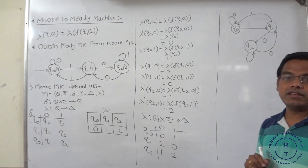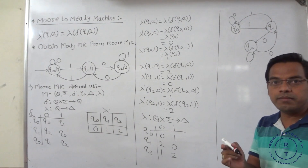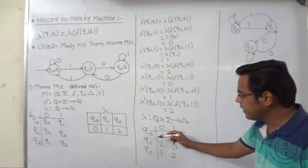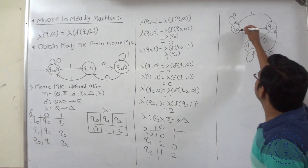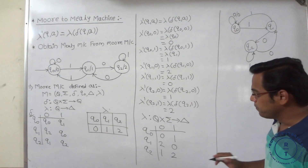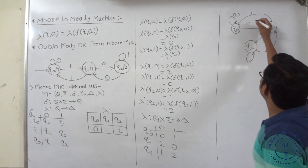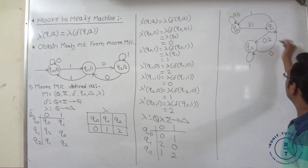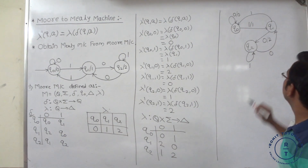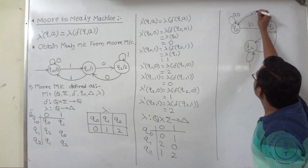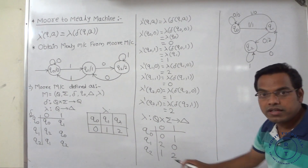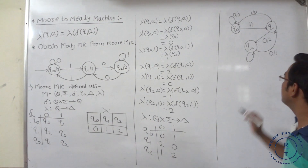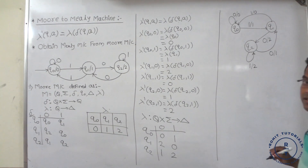The output labels on the transitions are: q0 with input 0 → output 0; q0 with input 1 → output 1; q1 with input 0 → output 2; q1 with input 1 → output 0; q2 with input 0 → output 1; q2 with input 1 → output 2. This is the final Mealy machine.